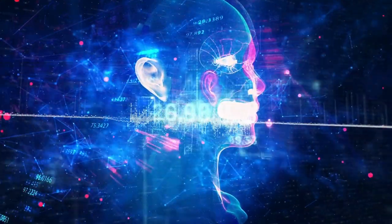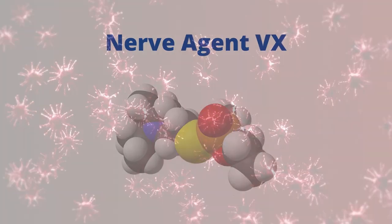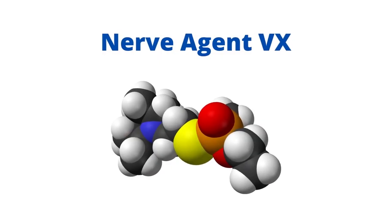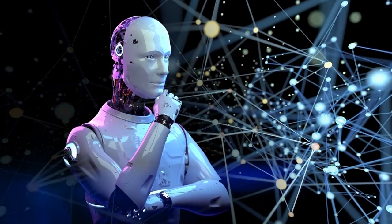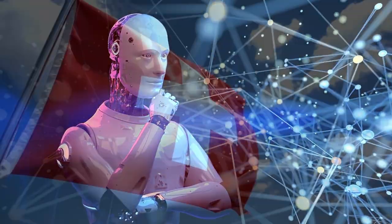In fact, the artificially intelligent software was able to come up with thousands of molecules that could be used as chemical weapons in just a few hours. Some of these molecules are already known to us, like the nerve agent VX, but some new molecules look like they could be even more dangerous than known chemical weapons.